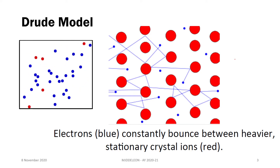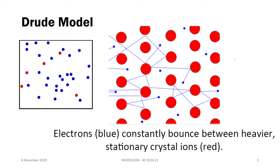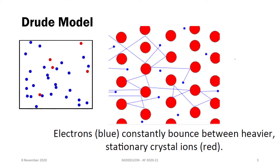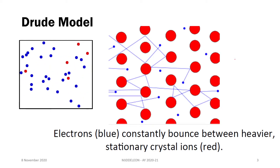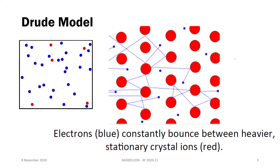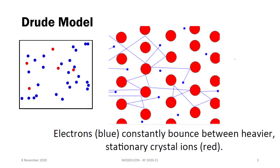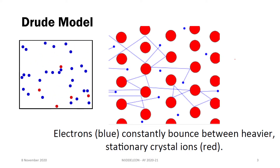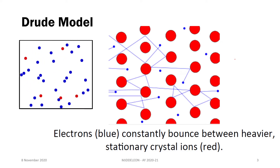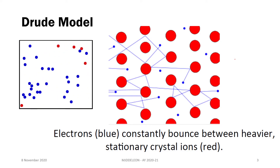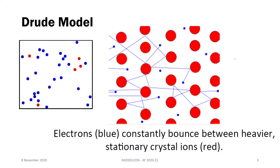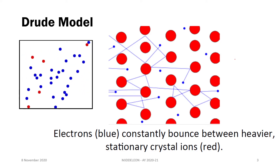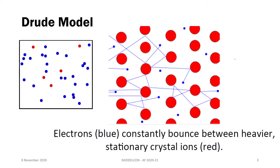The assumptions of the Drude model are that electrons, in the form of a gas of electrons, are free-moving particles in space with momentum and energy. They are subject to instantaneous collisions with other electrons, nuclei, or imperfections in our solid. The probability of collision increases with the time frame we are considering, and particles will only reach thermal equilibrium through collisions. Basically, electrons are bouncing around in our solid, colliding with anything they touch.